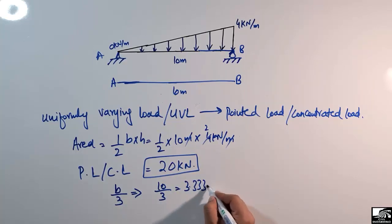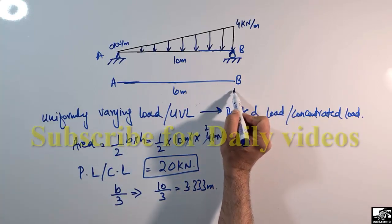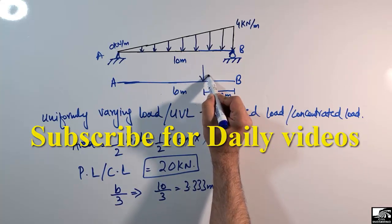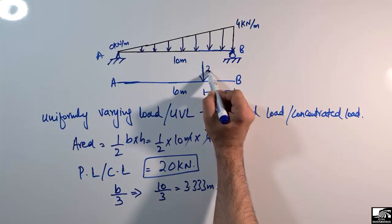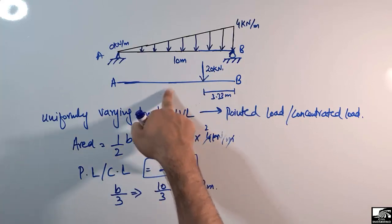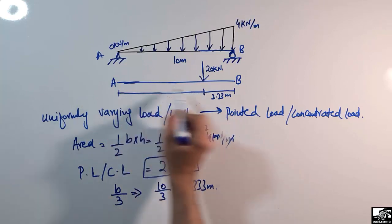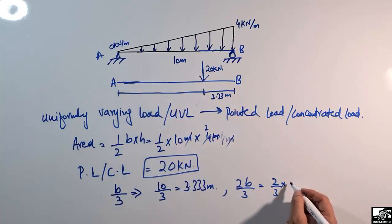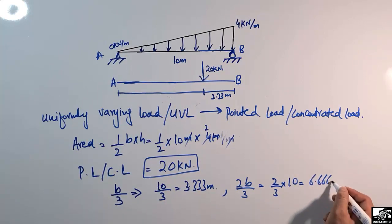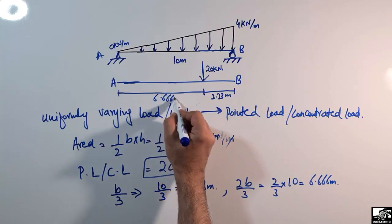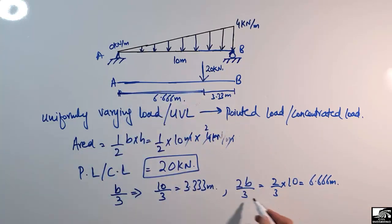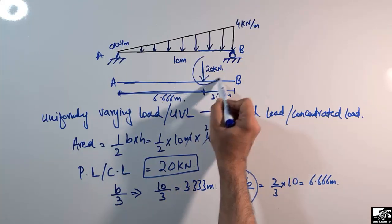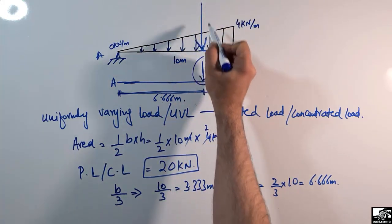This gives us 3.333 meters from the right end. From the left end, the distance is 2b/3, which equals 2 times 10 divided by 3, giving 6.666 meters. So the 20 kN concentrated load acts at 6.666 meters from the left end and 3.333 meters from the right end. This point is the centroid of the triangle.